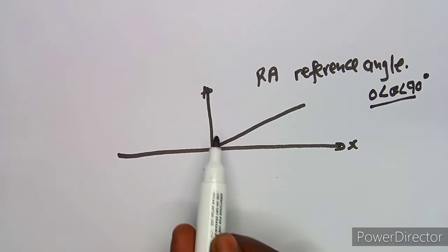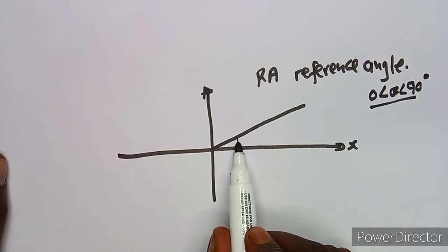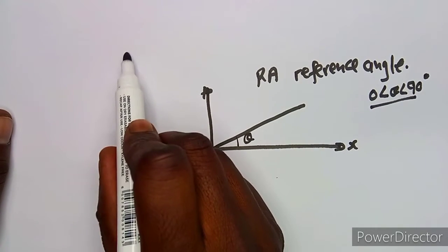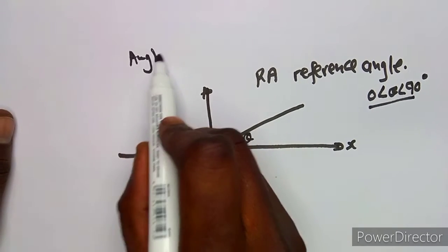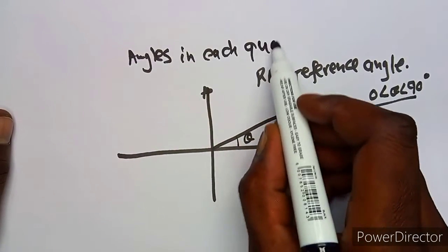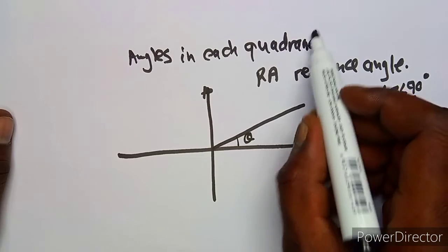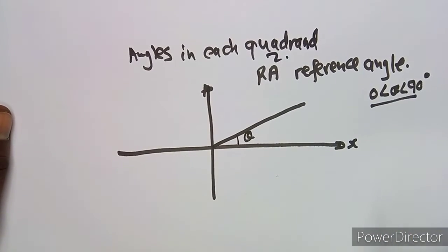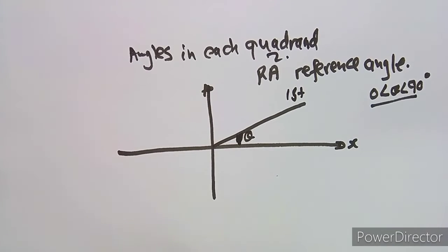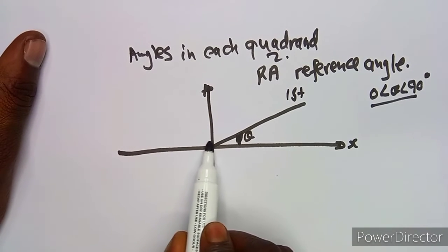In the first quadrant, we are not going to see any effect on theta — the angle remains as it is. But in the second quadrant, things are different.